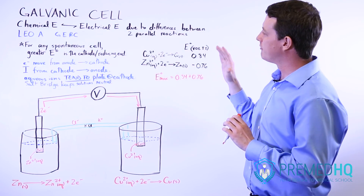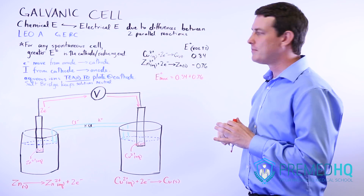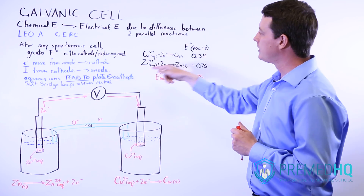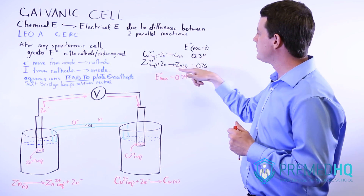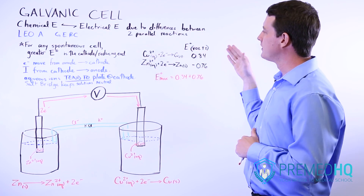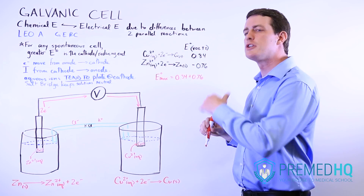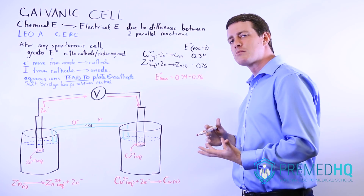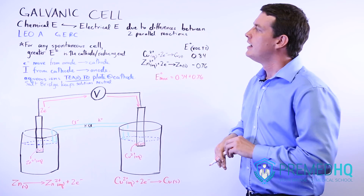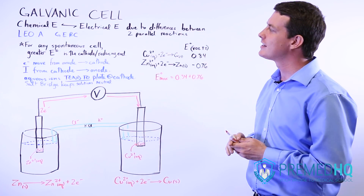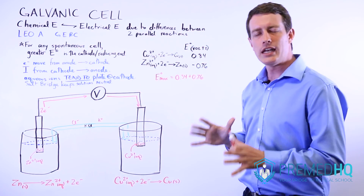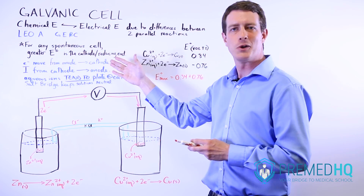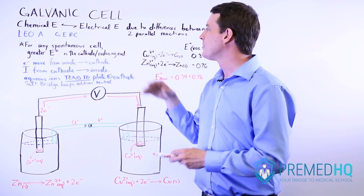Here is a standard reduction table showing the standard reduction potential in volts for turning Cu²⁺ into solid copper and Zn²⁺ into solid zinc. Copper has a positive reduction potential, meaning reduction of copper is favorable, whereas zinc has a negative reduction potential, meaning reduction isn't favorable but oxidation is. For any spontaneous cell, the side with the greater standard reduction potential will always be the cathode — the end where reduction occurs.